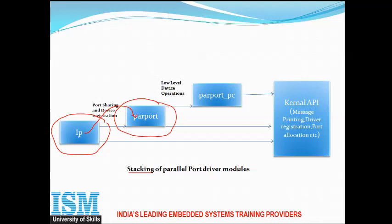So line printer (LP) is the module whose call goes and searches the definition in parport. LP is a driver for the printer on the parallel port and it makes calls into the generic parallel port, that is parport. There are several kinds of parallel ports and each has their own low-level driver. The most common one is parport_pc, which calls definitions present in parport. LP is dependent on parport, and parport_pc is also dependent on parport. This is called stacking of the parallel port.